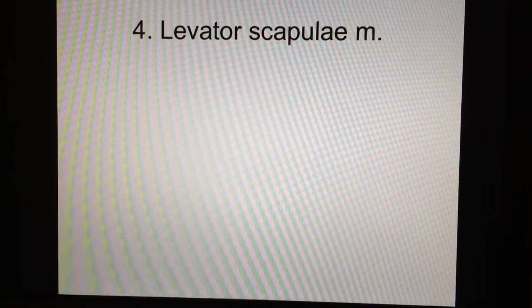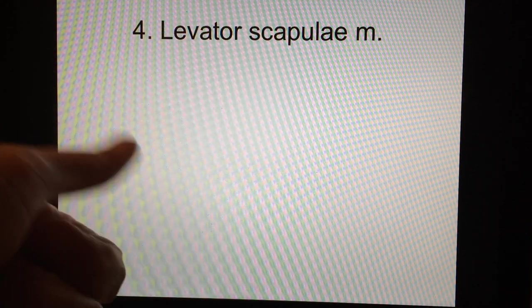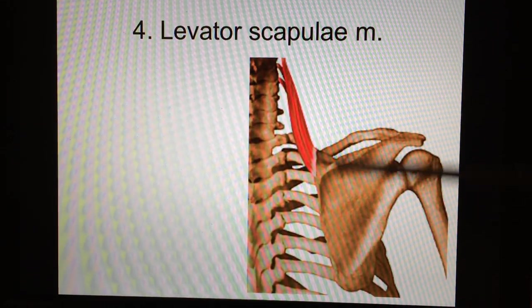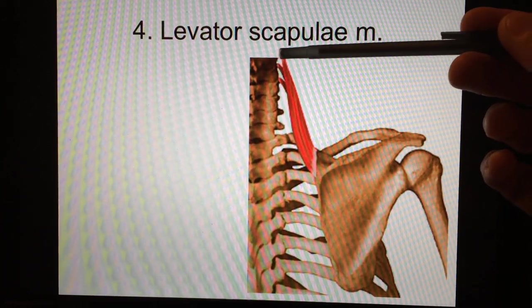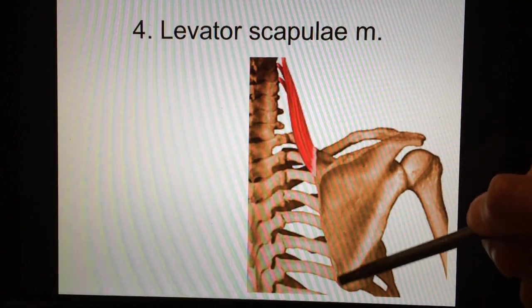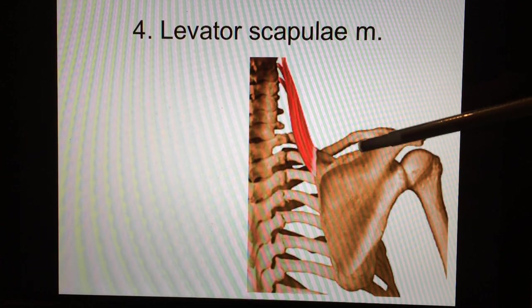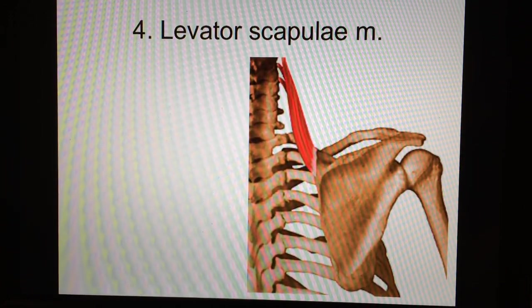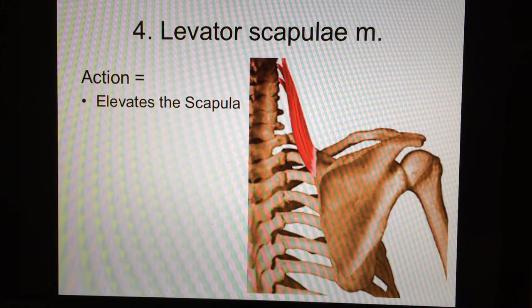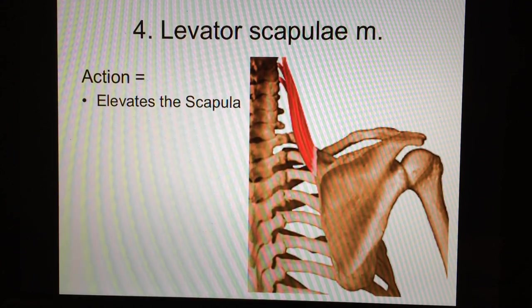Number four. Levator scapulae muscle. So this is easy. Levator means elevate, raise, and that tells you what it does. It raises the scapula. And I'm going to keep this one real short. So you can see it's anchored on the cervical region. And then, does anybody remember what this was right here? This is the inferior angle down here. This is the superior angle. Action. Obviously, it elevates the scapula. That's what the name means. Levator scapula. So again, helping to shrug your shoulders.